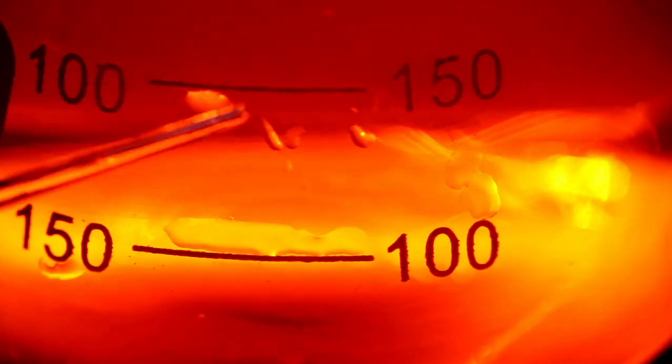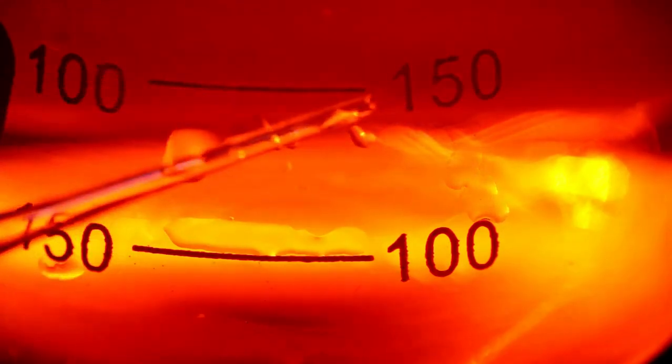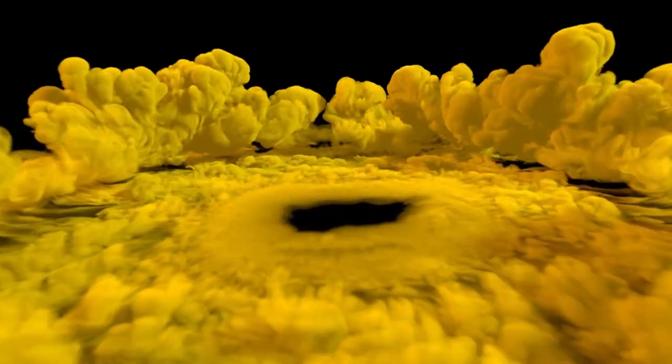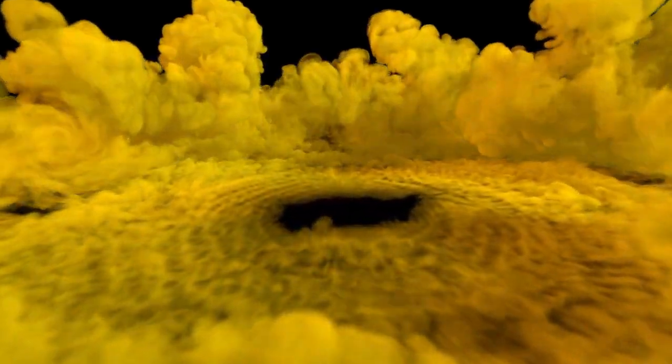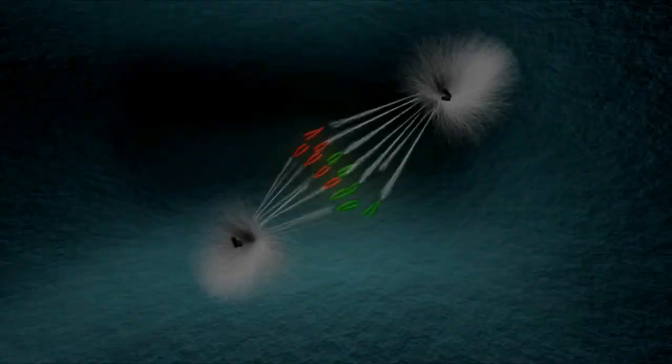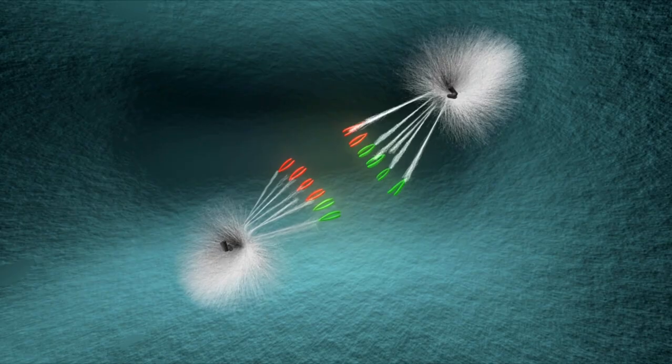Voyager 1, for instance, detected streams of interstellar particles penetrating this boundary, resembling tree roots breaking through rock. Interestingly, Voyager 1 and Voyager 2 observed differences as they crossed the heliopause. Voyager 1 experienced a slowing solar wind near the boundary, while Voyager 2 detected a transitional layer in the solar wind, highlighting the complex nature of the heliosphere.